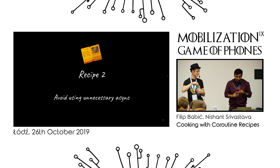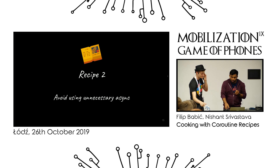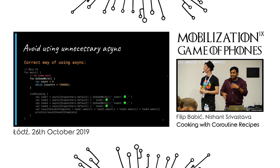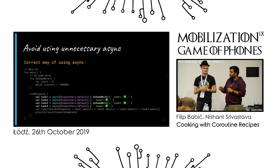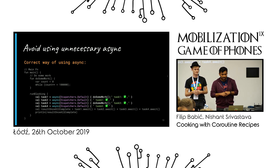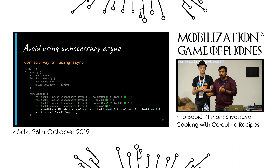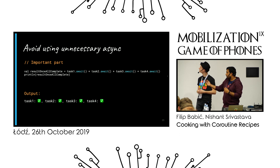We know about coroutine builders — launch, async, withContext, withTimeout. But what's not clear for many people is why you actually need async/await. The correct way is to create multiple parallel tasks using async, run them all in parallel — task1, task2, task3, task4 — some doing work, then at the end await all those values, concatenate them, and print. The semantic meaning of async is that you have multiple parallel tasks running, and then you wait on all of them to get the final values.